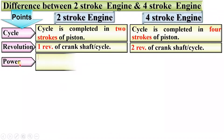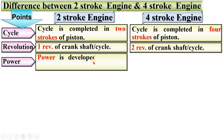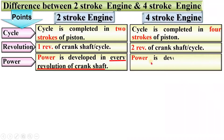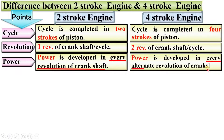Next point, power. In case of a two-stroke engine, power is developed in every revolution of the crankshaft. Whereas, in case of a four-stroke engine, power is developed in every alternate revolution of the crankshaft.